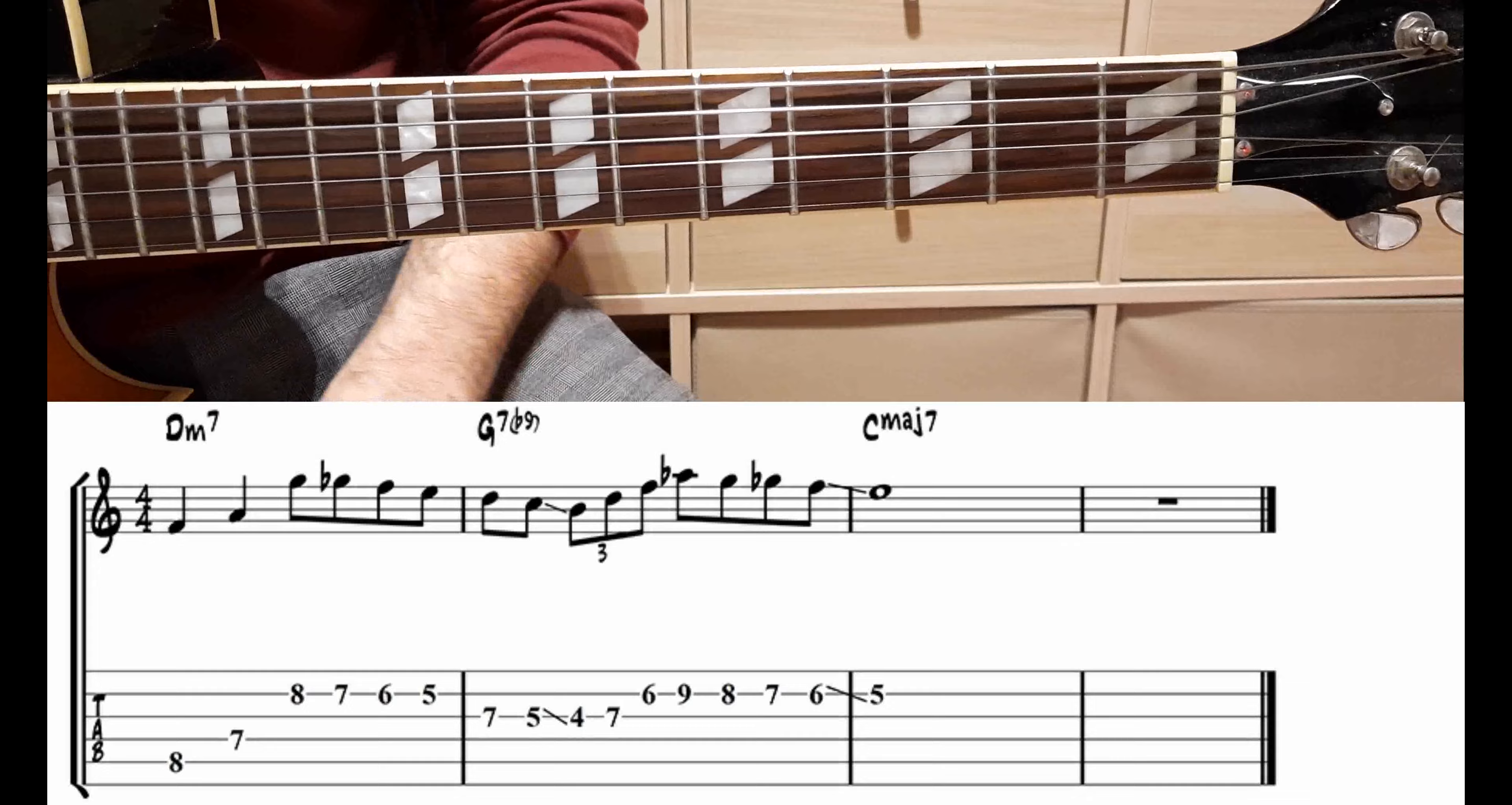Questa melodia comincia con la nota Fa sull'ottavo tasto seconda corda, quindi Fa, un quarto, La, discesa cromatica sulla quinta corda, ottavo tasto, Sol, Sol bemolle, Fa e Mi.